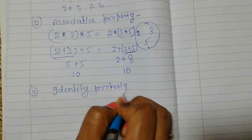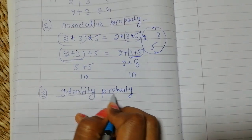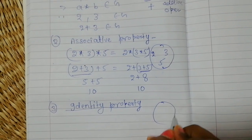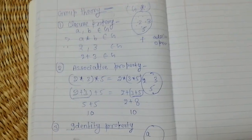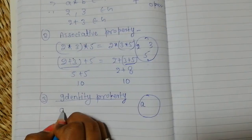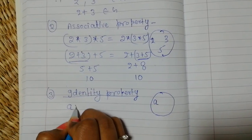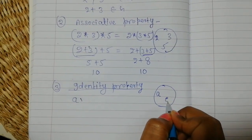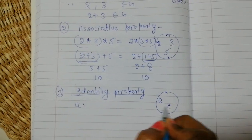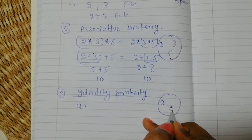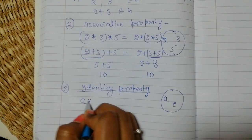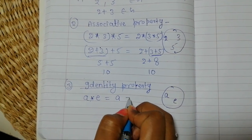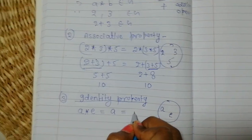Next is identity property. In this property, we take element a. When we operate this element, there exists an element e — this is called the identity element. When we operate e with a, we get a. Whether we operate on the left side or the right side, it is the same: e star a equals a star e equals a.